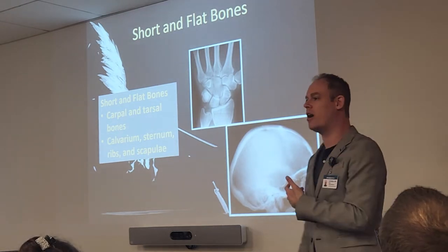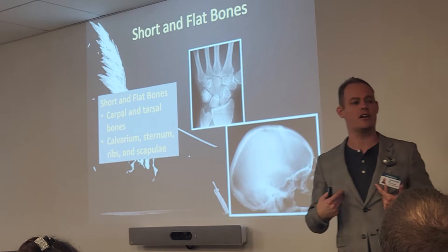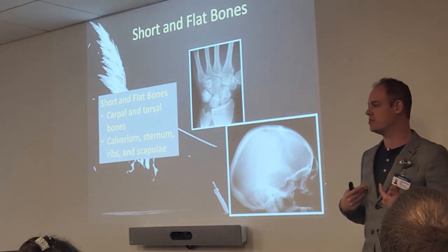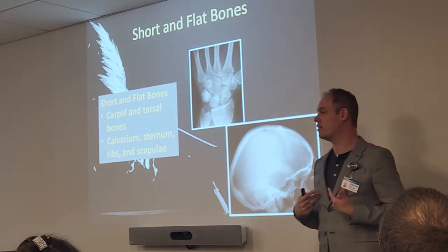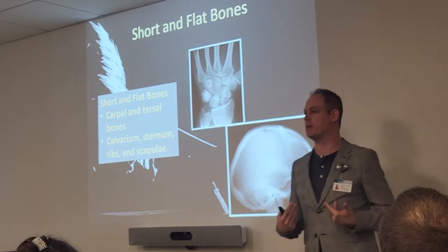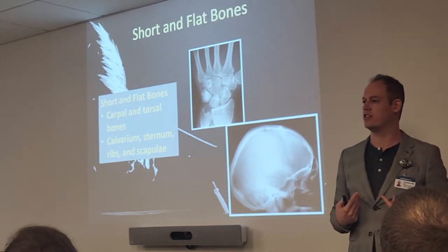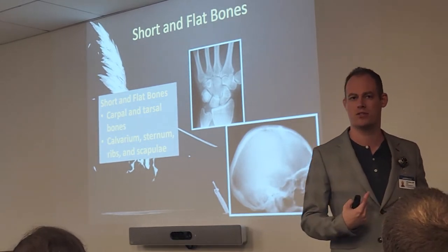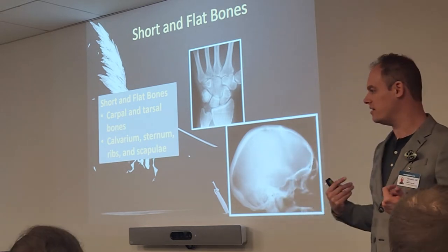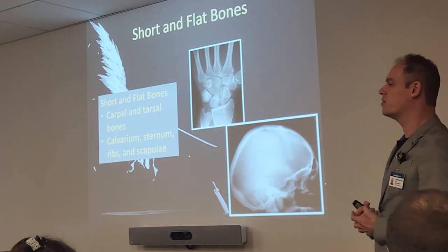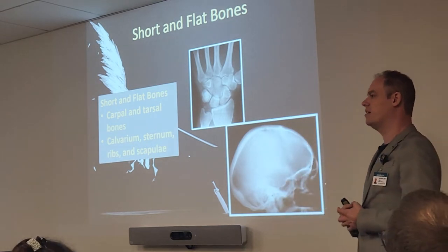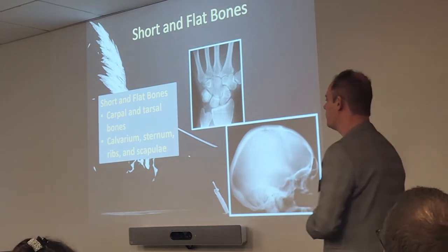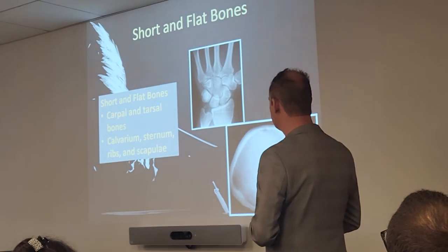Ribs are the one people often forget — ribs are considered flat bones. They're actually very flat in shape and appearance if you look at them up close, even though they're quite elongated. And of course the scapulae are flat as well.